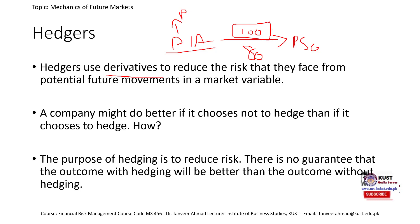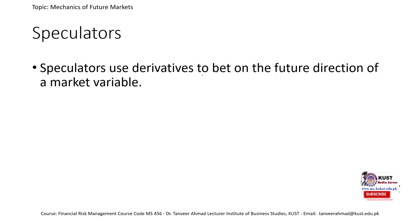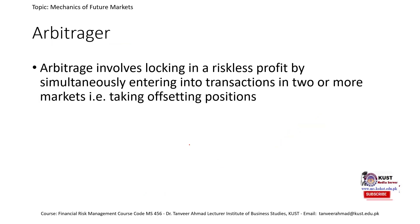The second type is the speculator, who uses derivatives to profit by betting on the future direction of market prices. Their goal is not to minimize risk but to profit. The profit and loss calculations discussed in the previous slides assumed parties were speculators — either betting that prices would go up (long call) or go down (long put).